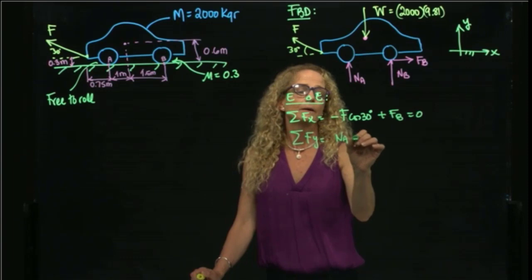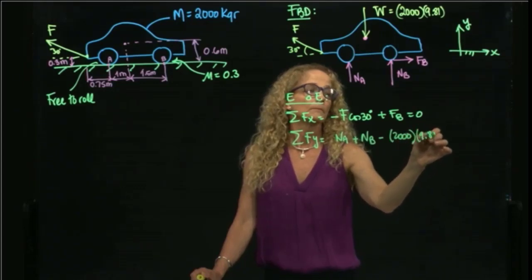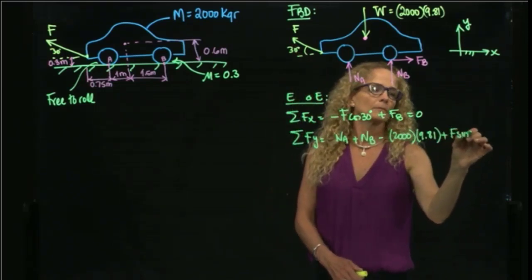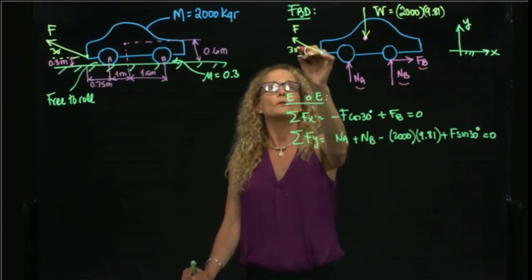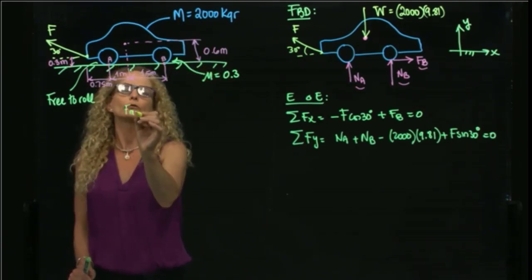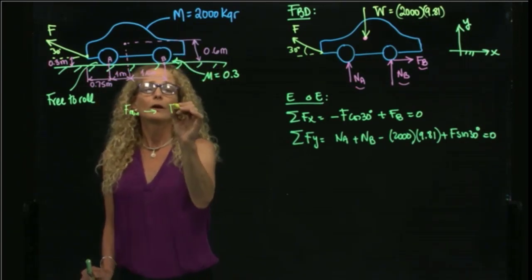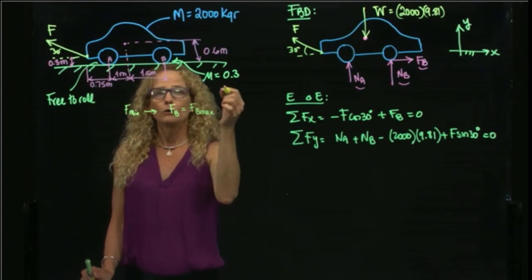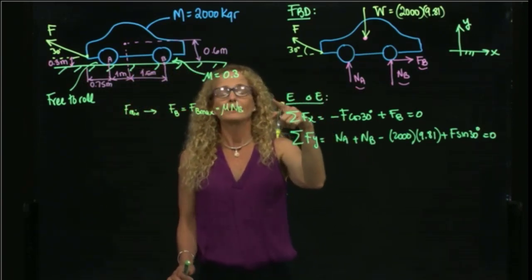For forces in Y: NA plus NB minus the weight plus the Y component of force F equals zero. Since we want the minimum force to move the car, we set this up as impending motion. Therefore, FB equals FB maximum, which equals μ times NB. That gives us one fewer unknown since NB and FB are now related.